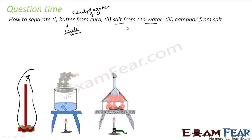Salt from seawater — in salt and seawater, there is a difference in volatility. Salt is non-volatile and water is volatile. So we can do the evaporation process. If you evaporate, water will evaporate and salt will remain in the container.